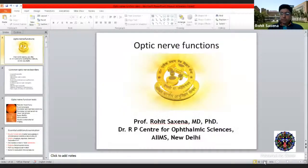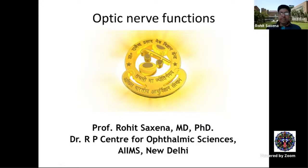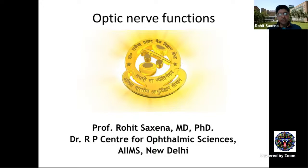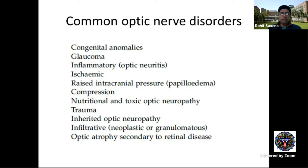I'll be talking on optic nerve functions. Neuro-ophthalmology borrows from glaucoma, retina, and all other specialties, so this will remind you of other lectures and bring together an optic nerve function assessment — what we need to do to understand common optic nerve pathology. The common ones include congenital anomalies, glaucoma, which is very frequently misdiagnosed and often coexists with neuro-ophthalmology disorders.